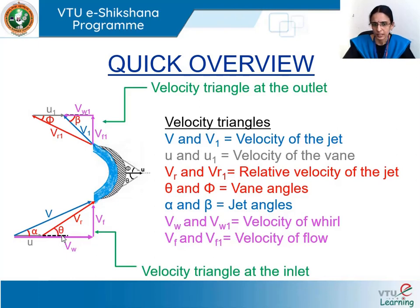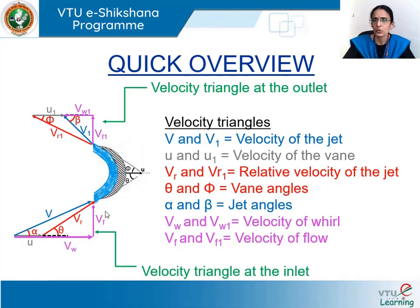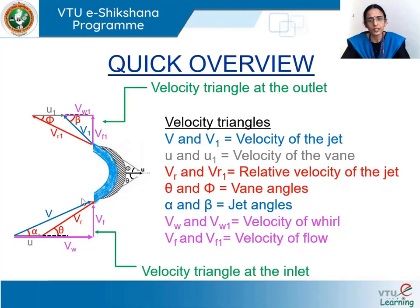θ is the vane angle at the inlet. The absolute velocity of the jet v can be resolved into components along the direction of motion of the vane and in the perpendicular direction; these components are known as velocity of whirl and velocity of flow respectively at the inlet. If the vane is smooth and frictionless, we can assume that the relative velocity at the inlet remains unchanged as the water flows through the vane, therefore vr = vr1.